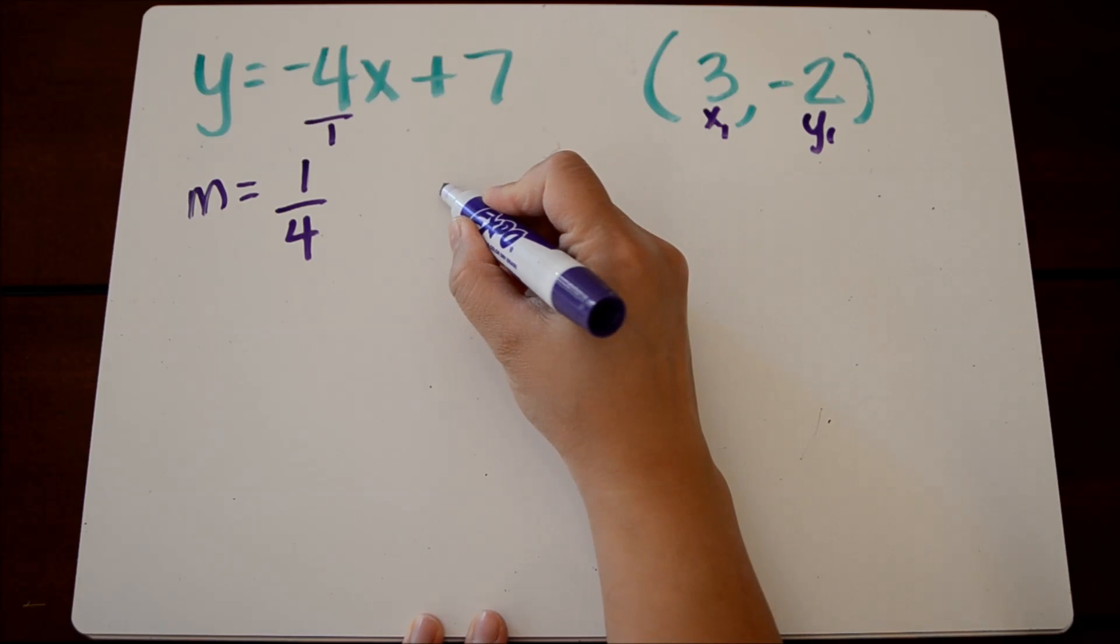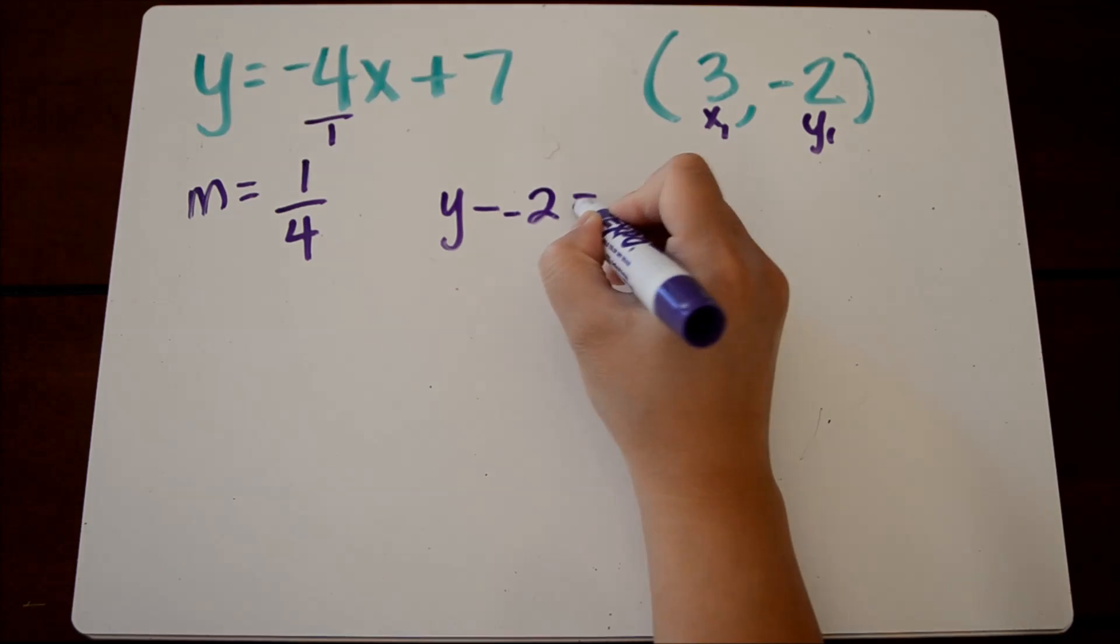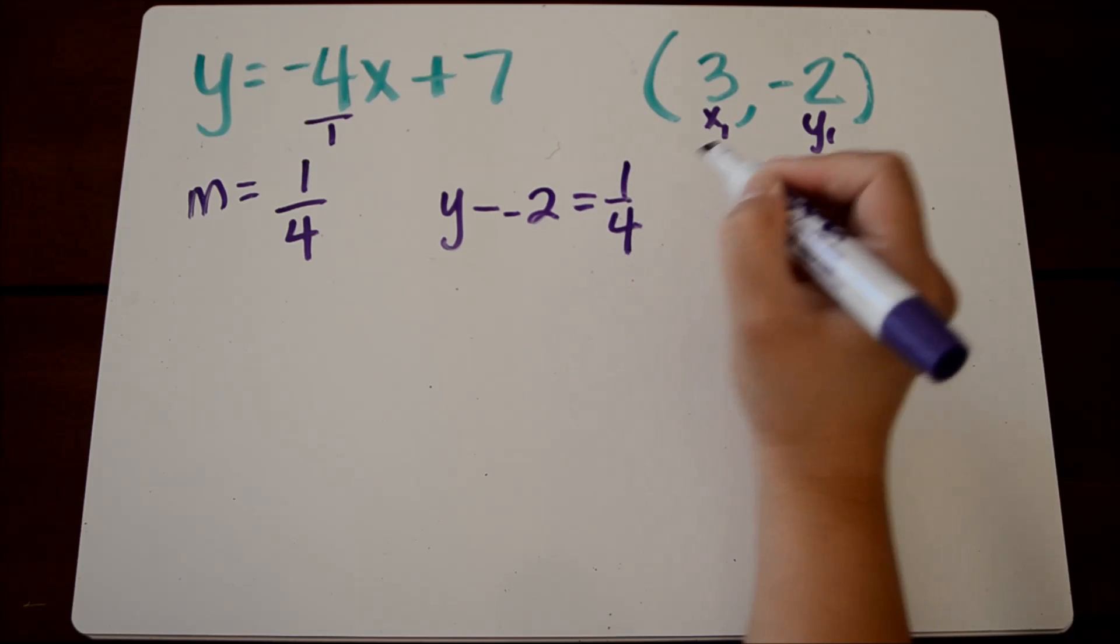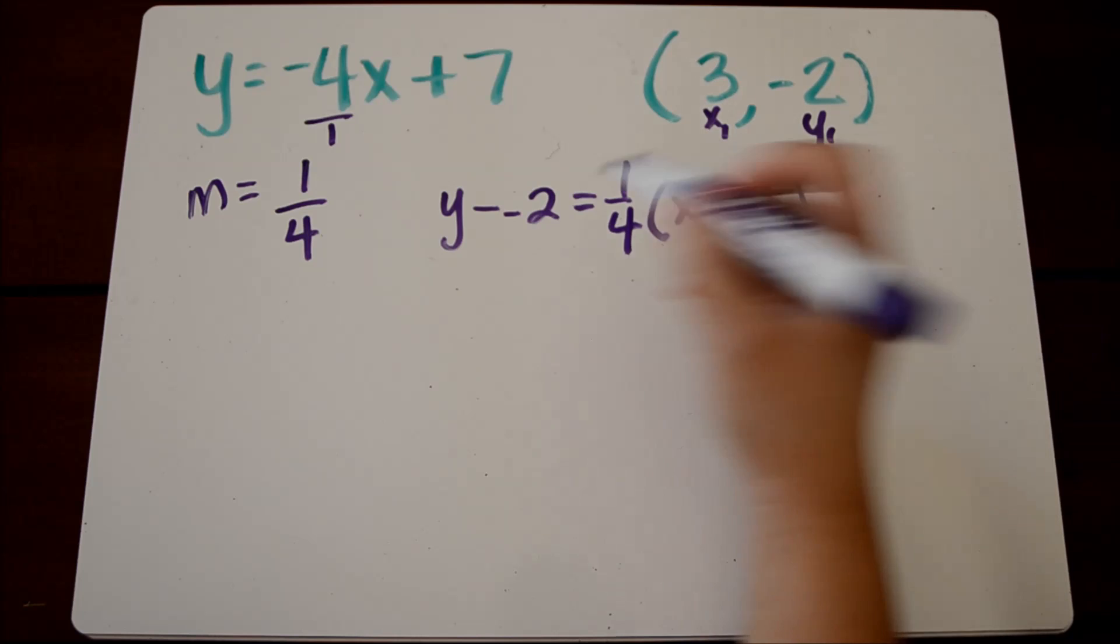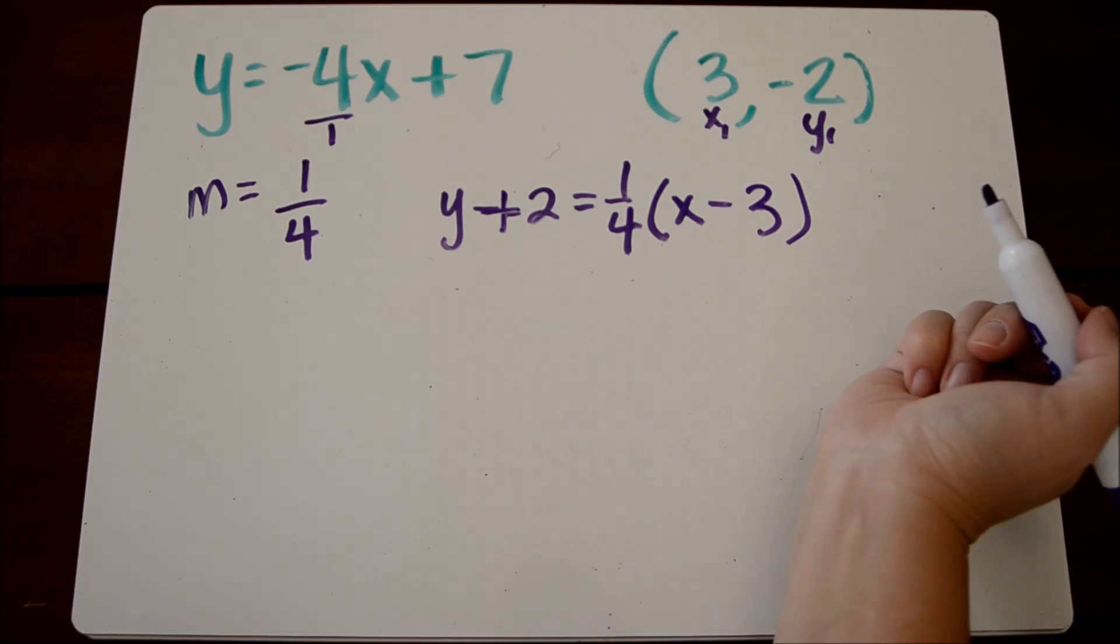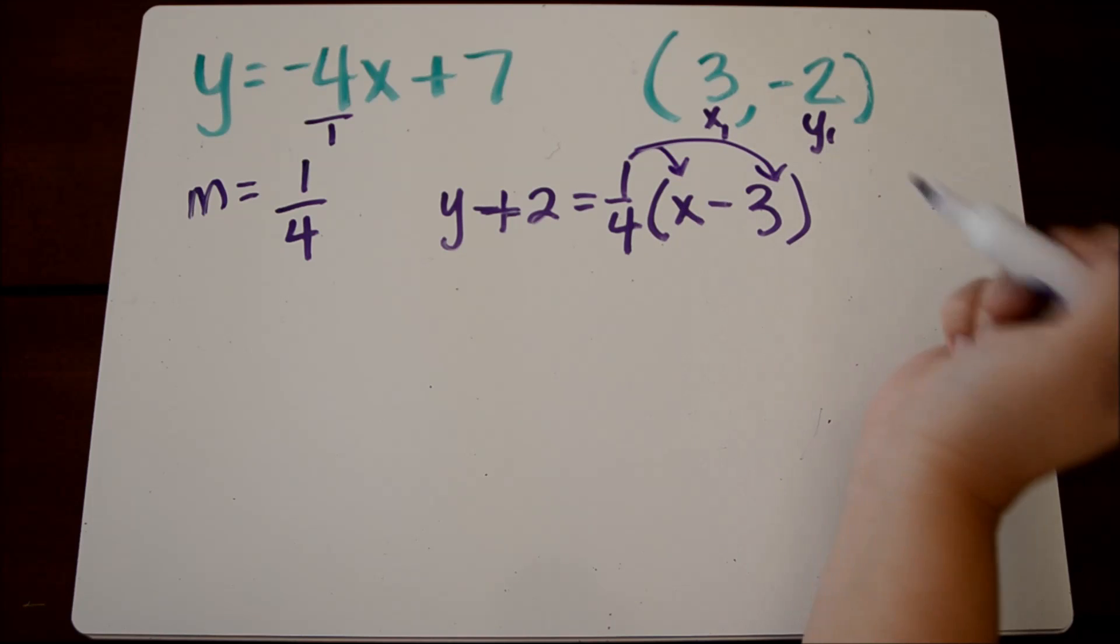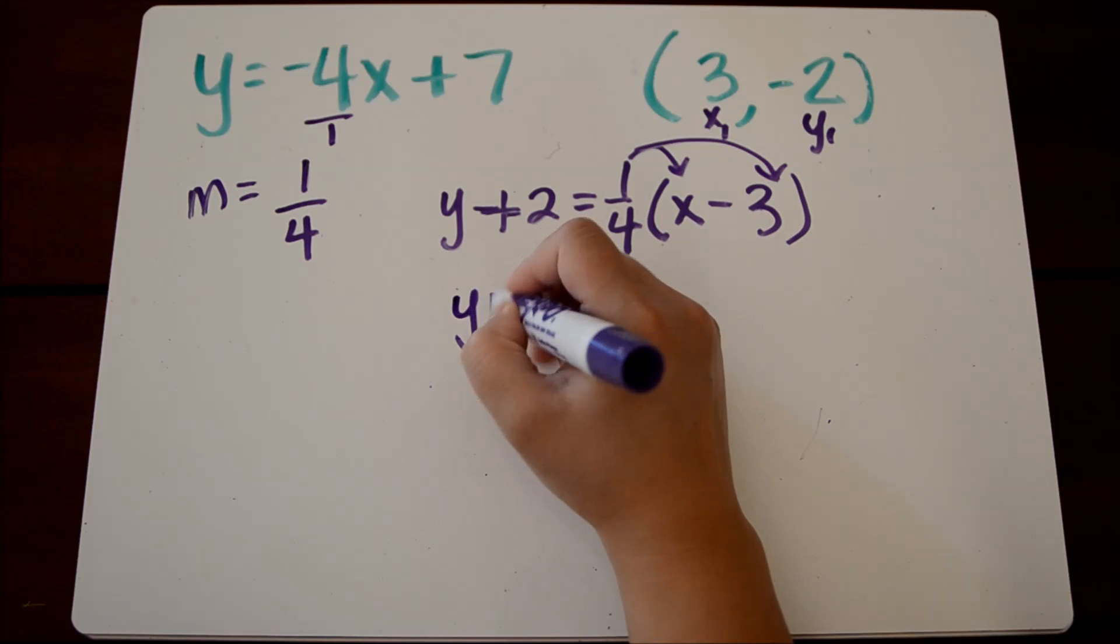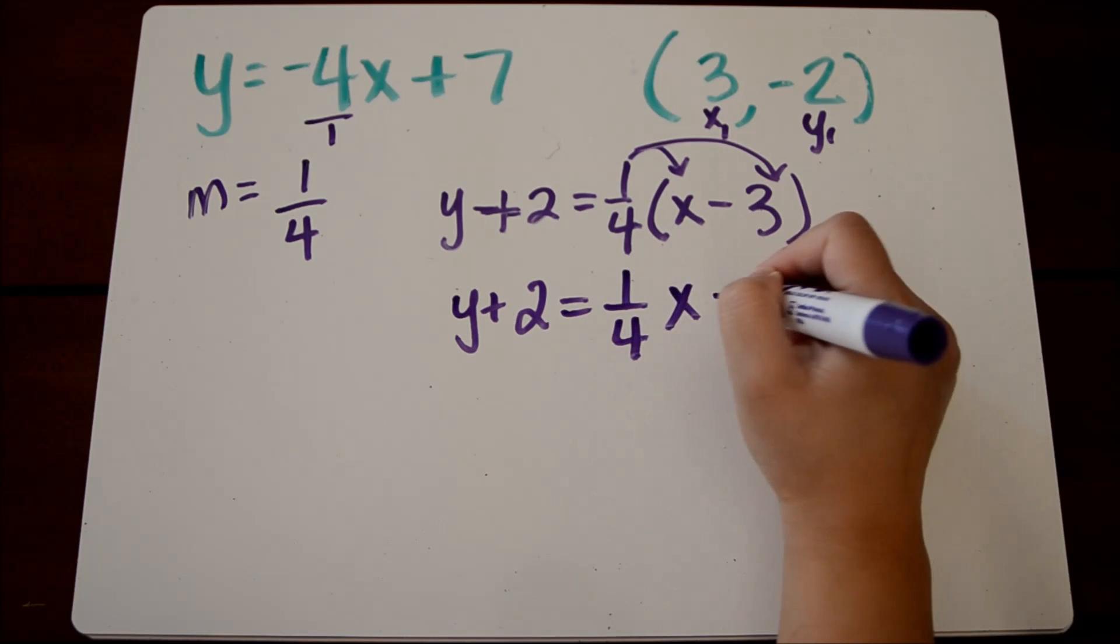And again, we're going to start with point-slope form, substituting these values in for our x one and y one. We have x minus three here. When we see minus and negative, we're going to change that to plus. And if we're writing an equation in slope-intercept form, our first step is to distribute to get rid of the parentheses. So we get y plus two equals one-fourth x minus three-fourths.